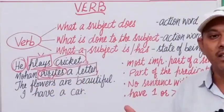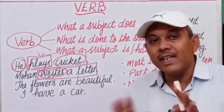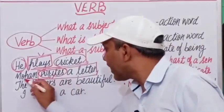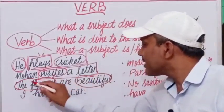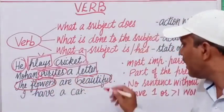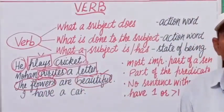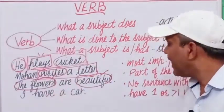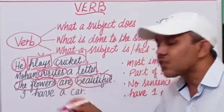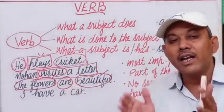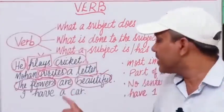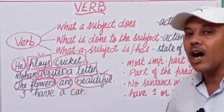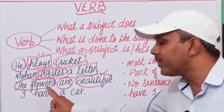Third example: 'The flowers are beautiful.' Although there is no action, flowers are the subject and beautiful is an adjective describing the flowers. The word 'are' represents the state of being — 'are' is a verb here, playing the role of a verb in this sentence. It tells us about the state of being of the flowers.